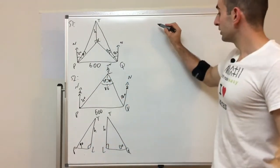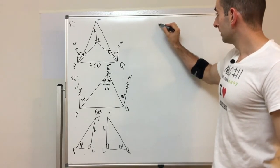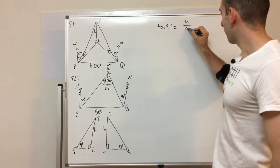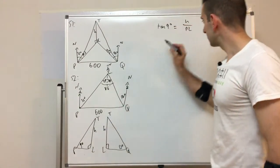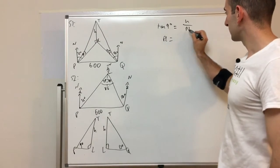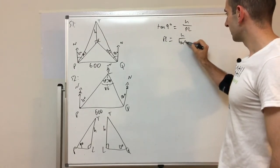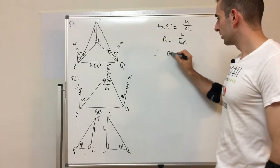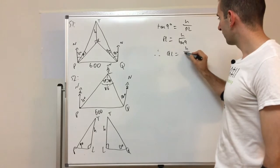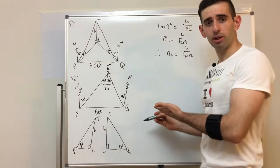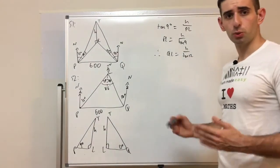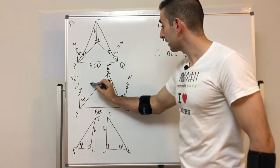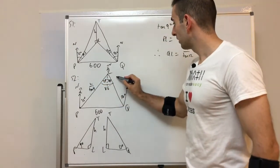So you can see here, using basic trig, tan 9 degrees equals H over PL. So that means PL is going to be, if we swap it, H over tan 9. And then we can just write therefore QL will be H over tan 12, because it's the exact same process except I swap 9 degrees for 12 degrees. So those are the two values for PL and QL which we put onto this diagram here to complete step 3.